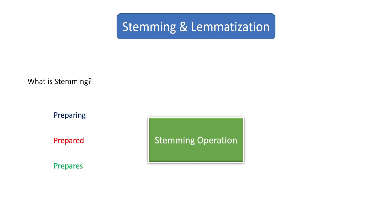Let's say we have these three words and we are going to perform stemming on them. Taking the first word 'preparing' and performing stemming, the output is 'prepar' — not a proper English word, it doesn't have any meaning. The second word 'prepared' gives the same output, and so does the third. What stemming does is it finds the root word and gives us that root word as output.